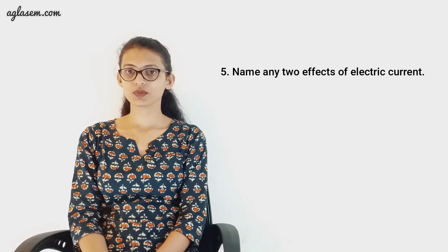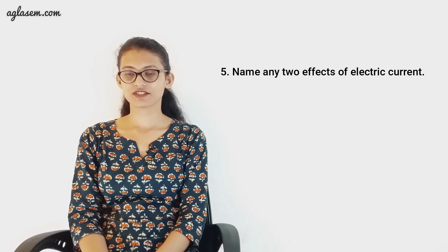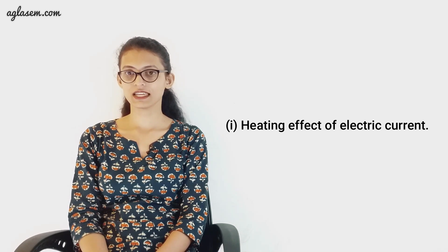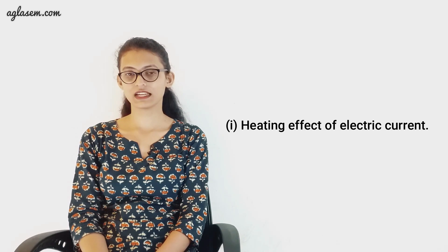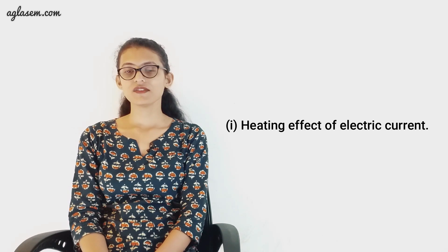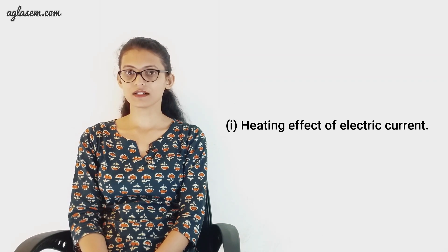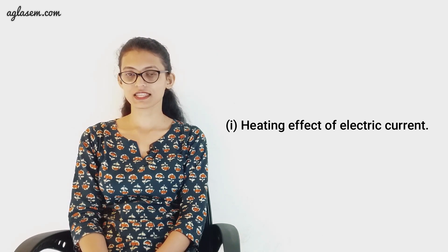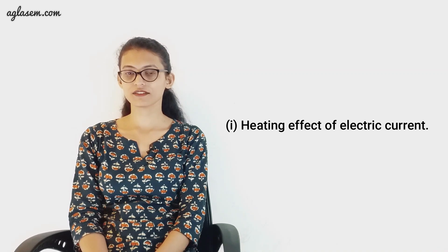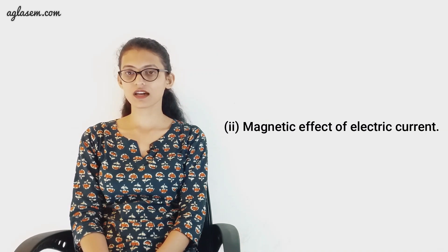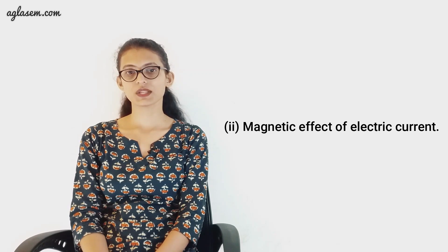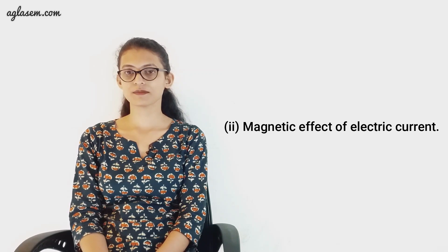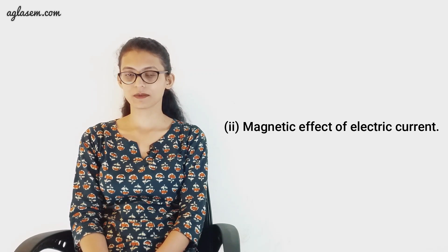Coming to question five: name any two effects of electric current. The first effect is the heating effect of electric current — when electric current flows through a wire, the wire gets heated. The second effect is the magnetic effect of electric current — when an electric current flows through a wire, it behaves like a magnet.